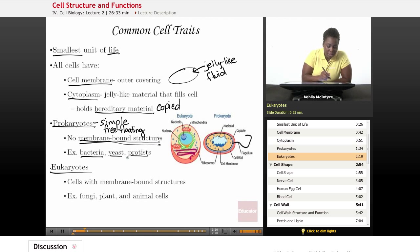Then we've got the more complex eukaryotes. These cells do have membrane-bound structures, and they're more complex. And examples would be fungi, plant, and animals.